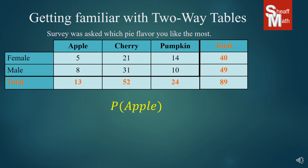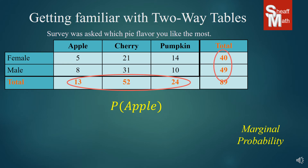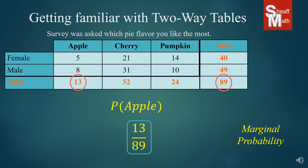Now here's a new type of probability — this one just has one item, one category. We call this marginal probability. The reason we call it marginal is because it deals with the margins of the totals column. So if it's just asking for apple, you just look at the total for that column and put it over the total of those surveyed. What's the chance of picking a random person who likes apple pie? There are 13 total apple pie lovers out of 89 total surveyed — a 13 out of 89 chance.